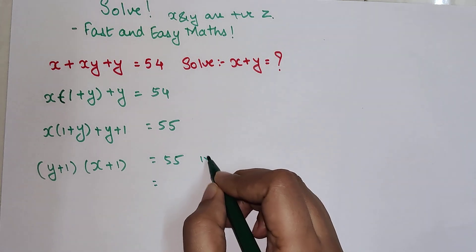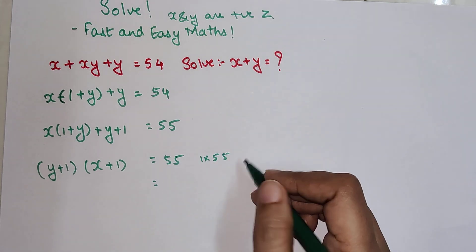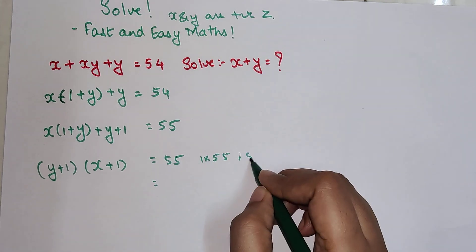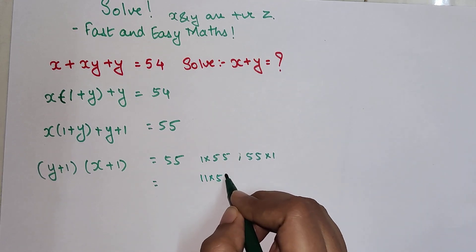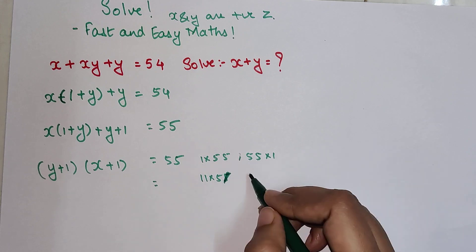So here now we can write this 55 as nothing but 1 × 55, right? Or I can write 55 × 1, or I can write 11 × 5, or I can write 5 × 11.